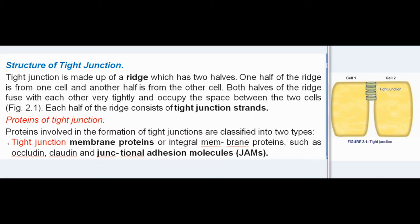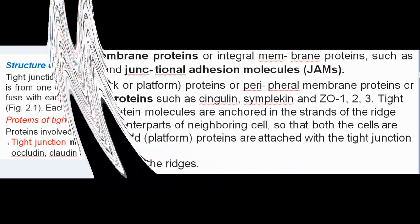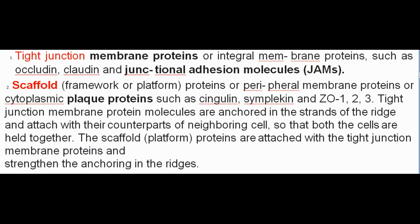Proteins of tight junction: Proteins involved in the formation of tight junctions are classified into two types. First, tight junction membrane proteins or integral membrane proteins, such as occludin, claudin, and junctional adhesion molecules (JAMs). Second, scaffold, framework, or platform proteins — also called peripheral membrane proteins or cytoplasmic plaque proteins — such as cingulin, symplekin, and ZO-1, ZO-2, ZO-3.